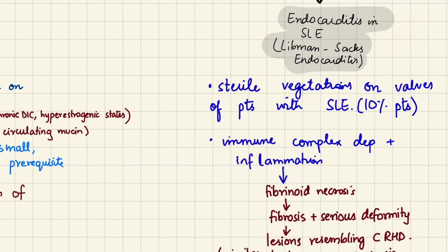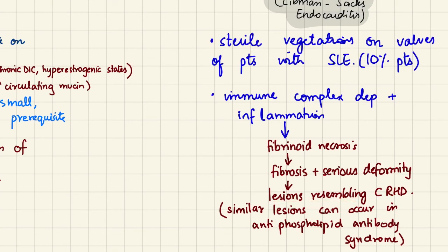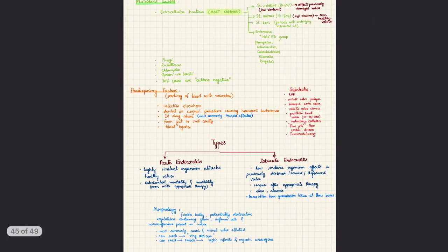Libman-Sacks endocarditis occurs in systemic lupus erythematosus, an autoimmune disorder. It involves sterile vegetations on valves of SLE patients in 10 percent of cases. The etiology is immune complex deposition leading to inflammation, fibrinoid necrosis, fibrosis, and serious deformities resembling chronic rheumatic heart disease. Similar lesions occur in antiphospholipid antibody syndrome, where antiphospholipid antibodies attack endocardial cell membranes, paving the way for clot formation.